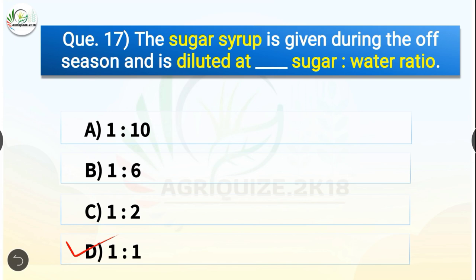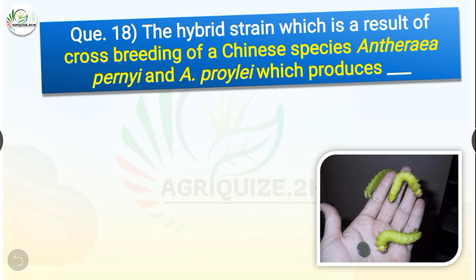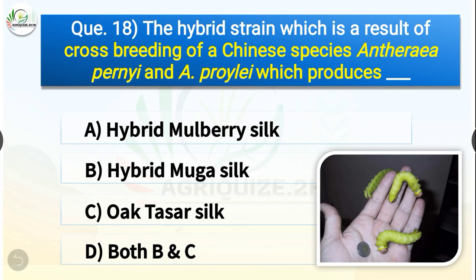Question number eighteen: The hybrid strain which is a result of crossbreeding of Chinese species Antheraea pernyi and Antheraea proylei produces dash. The options are hybrid mulberry silk, hybrid muga silk, oak tassar silk, or both B and C. The correct answer is option C — oak tassar silk. The hybrid strain from crossbreeding Antheraea pernyi and Antheraea proylei produces oak tassar silk.